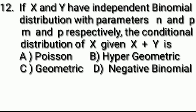Question number 12: If x and y have independent binomial distributions with parameters (n, p) and (m, p) respectively, the conditional distribution of x given x + y is hypergeometric. Answer: Option B.